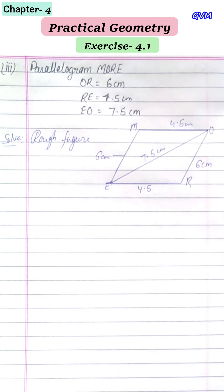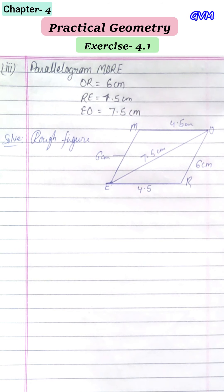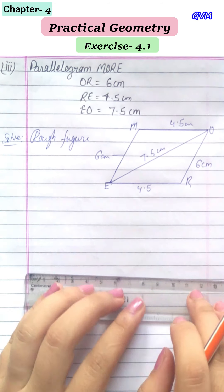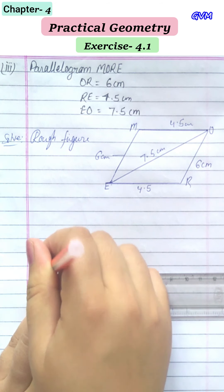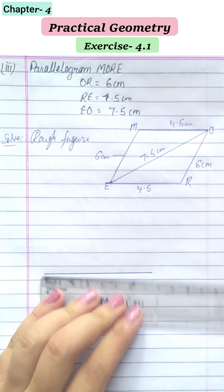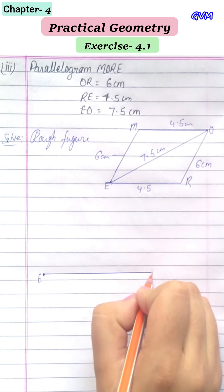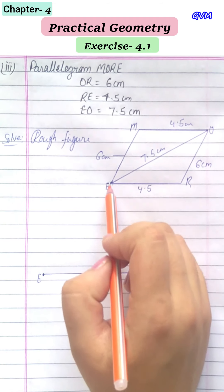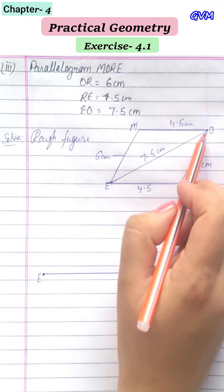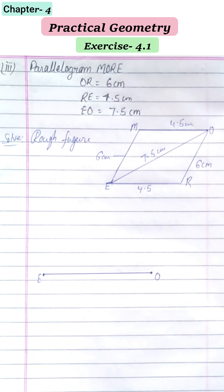Now let's draw the parallelogram with real measurements. First draw the diagonal EO = 7.5 cm. Label point E and point O. From E and O we need to construct lines to find point M. EM = 6 cm.